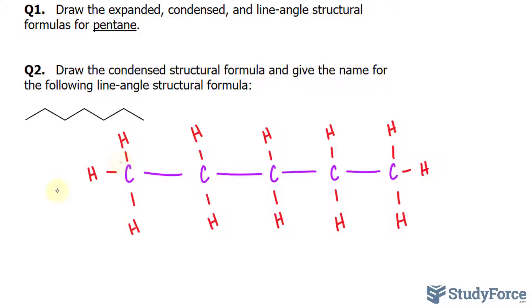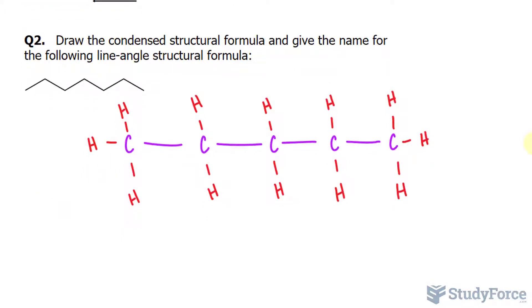The condensed version is what you typically see in textbooks. Rather than drawing out these hydrogens, you can write down CH3, CH2, CH2, again, and CH3. That's the condensed version.